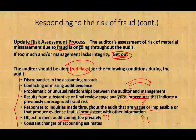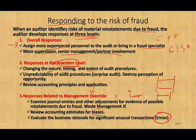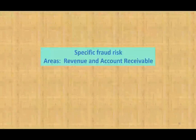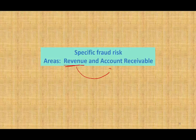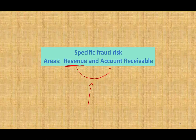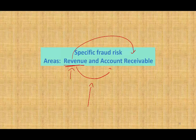This is basically how the auditor responds — they look at red flags and respond at three different levels: the overall response, response at the assertion level, and response related to management override. In the next session, I'm going to look at specific account fraud. The most popular or common method companies use to commit fraud is through revenue. So the next session covers revenue and accounts receivable. Revenue and accounts receivable go hand in hand — if you're cooking revenue, by default you're cooking accounts receivable, because when you inflate revenue with no cash, you manage your accounts receivable.